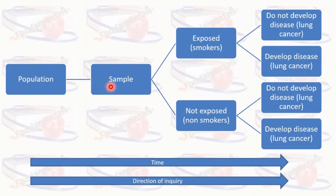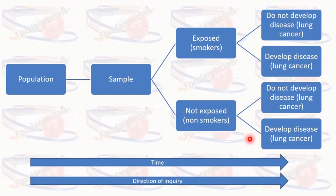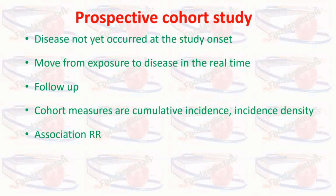From the population, researchers select a sample on the basis of the risk factor — those exposed and those not exposed to the risk factor of interest. For example, in the case of smokers and lung cancer: smokers who do not develop the disease and smokers who do develop the disease; similarly, among non-smokers, those who do not develop the disease and those who do. These four groups allow the researcher to measure cumulative incidence and incidence density and calculate the relative risk using a two-by-two table.